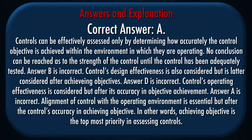Correct answer: C. Explanation: Controls can be effectively assessed only by determining how accurately the control objective is achieved within the environment in which they are operating. No conclusion can be reached as to the strength of the control until the control has been adequately tested. Answer B is incorrect — controls design effectiveness is also considered but is latter considered after achieving objectives. Answer D is incorrect — controls operating effectiveness is considered but after its accuracy in objective achievement. Answer A is incorrect — alignment of control with the operating environment is essential but after the controls' accuracy in achieving objective. In other words, achieving objective is the topmost priority in assessing controls.